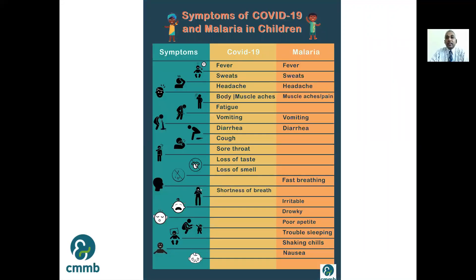In children, you are unlikely to have specific symptoms. Children are usually irritable, drowsy, have poor appetite, and have difficulty sleeping. Malaria can present with these symptoms, but children also commonly have fever, sweats, headache, and body aches and muscle pain. Like in adults, children with cough, sore throat, and loss of taste and smell are unlikely to have malaria and more likely to have COVID-19. Difficulty breathing signifies a much more serious COVID-19 infection.